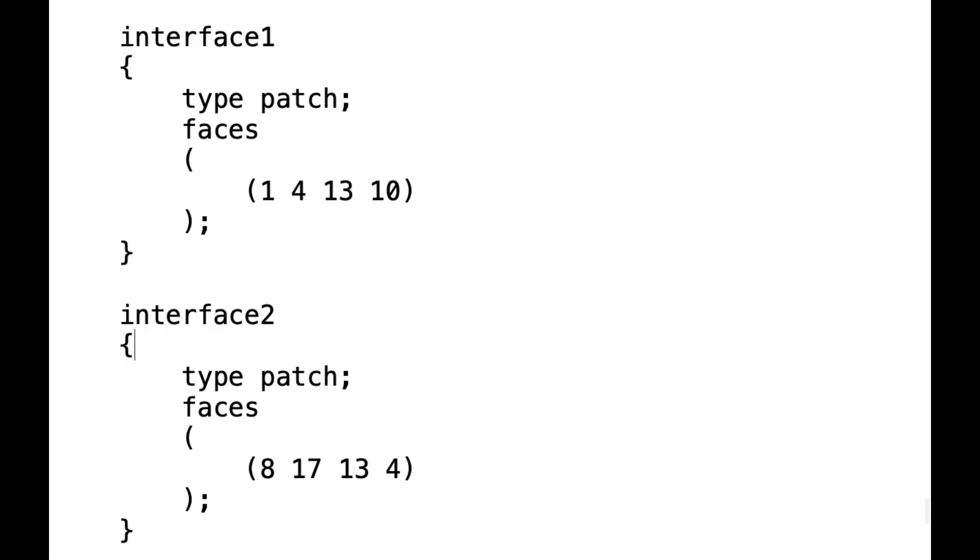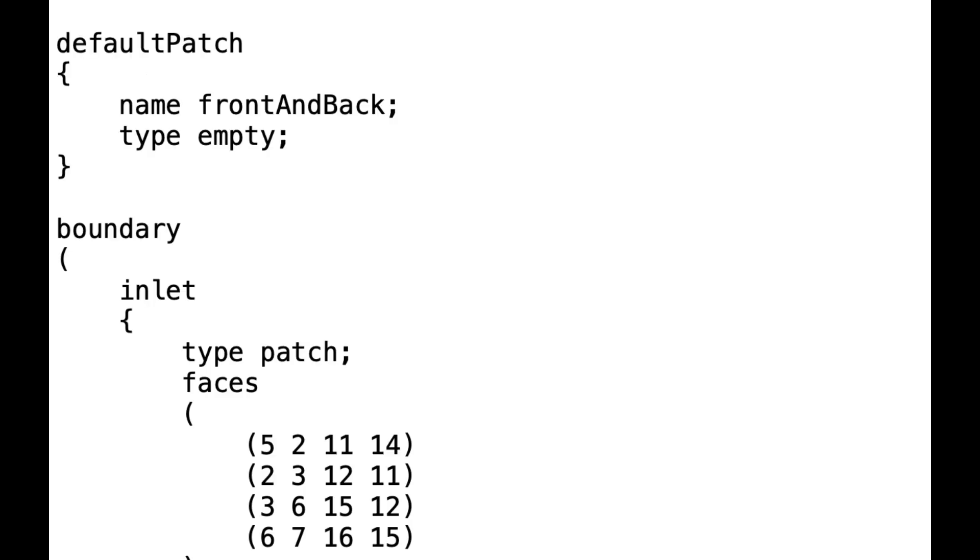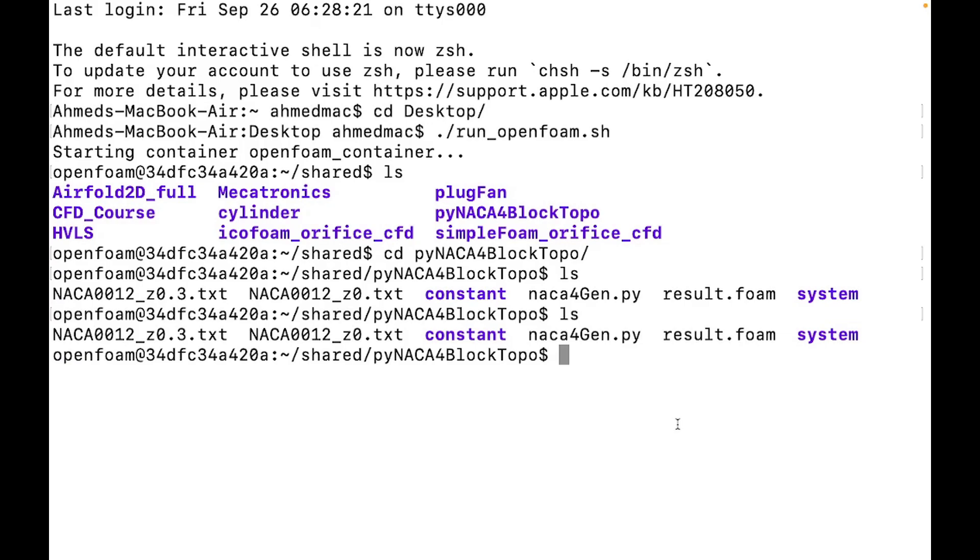Next, go back to your blockMeshDict file and write down all the boundary definitions exactly as shown here. Be sure to include the inlet, outlet, the airfoil wall and interface. Also don't forget to add a default patch for unselected faces. Now our blockMeshDict file is complete with all required definitions: vertices, blocks, edges and boundaries. Go to your terminal and run the blockMesh command.